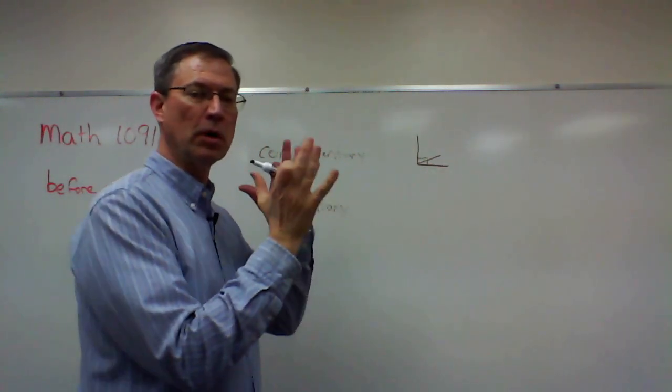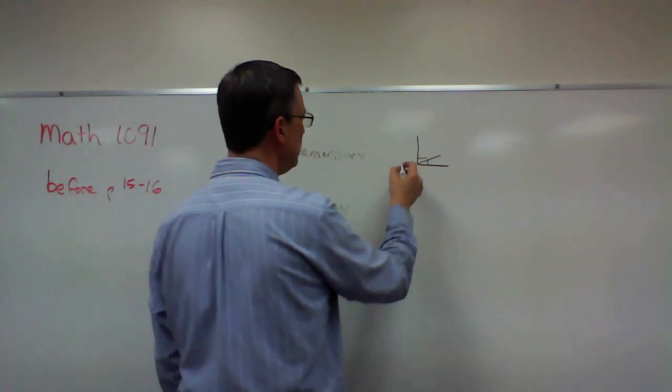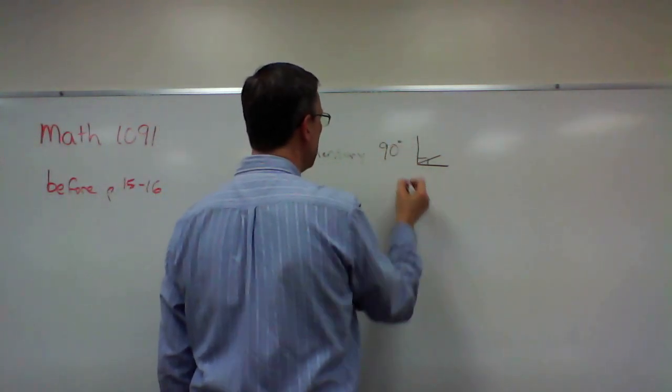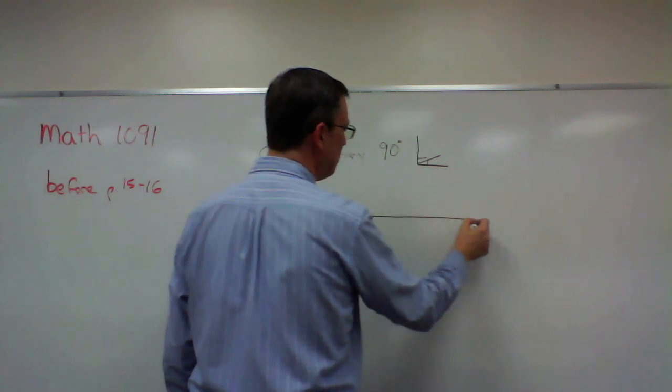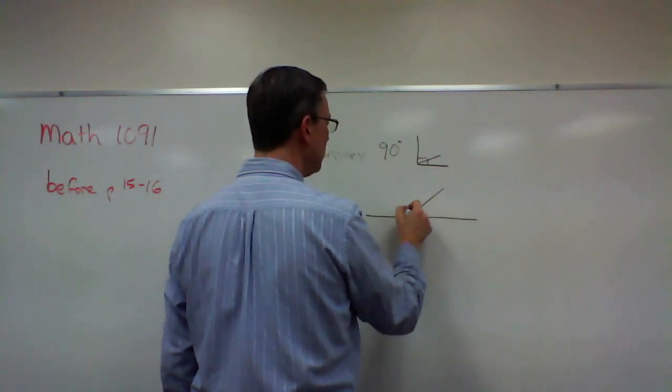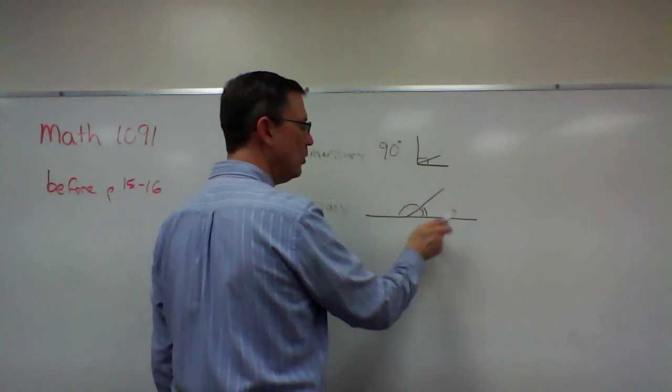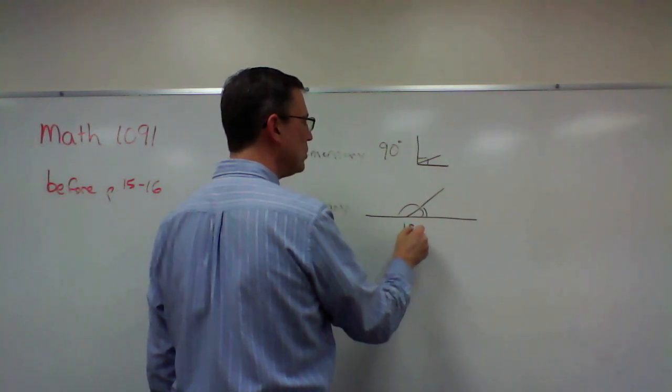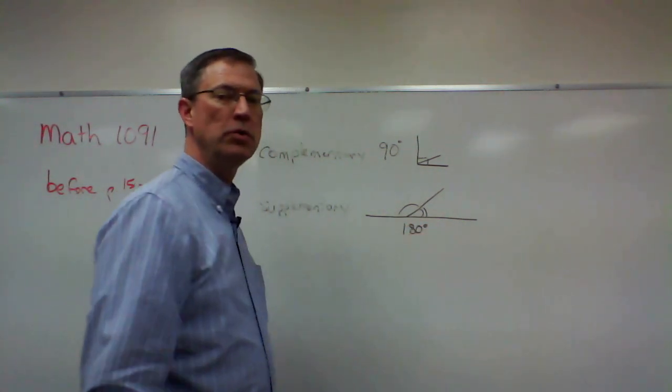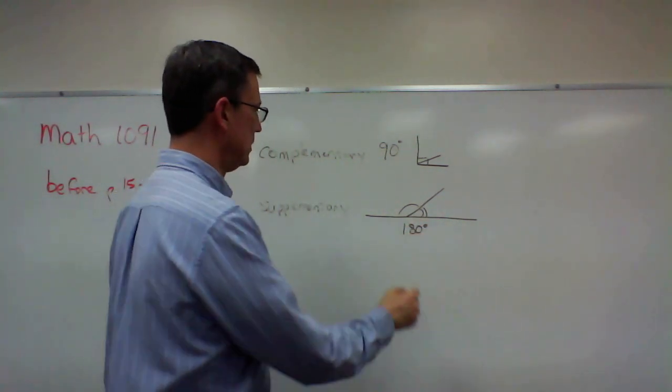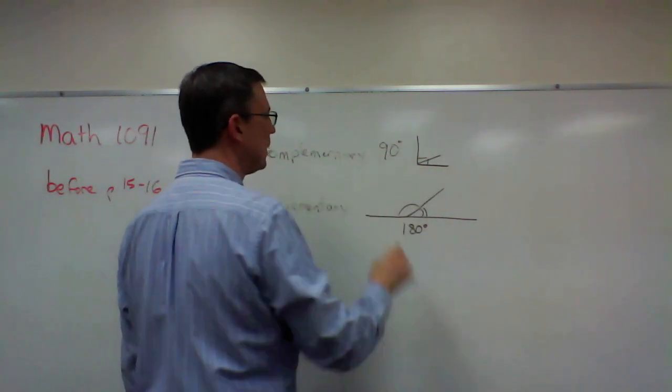Supplementary means that two angles, let's say this one and this one, when you put them together it equals a straight line, which is 180 degrees. So 90 degrees for complementary.